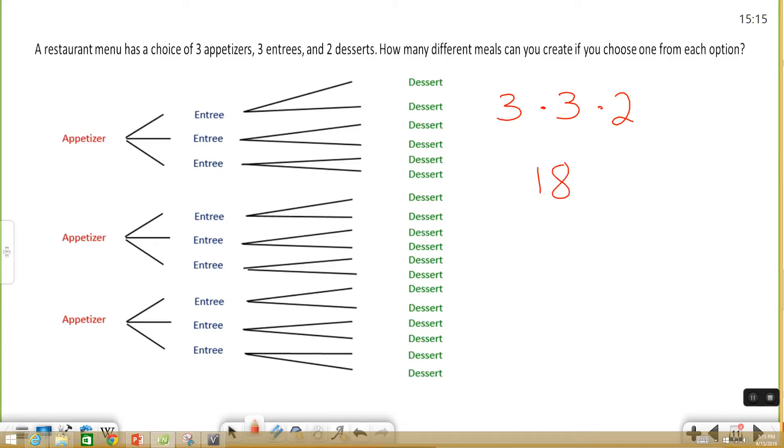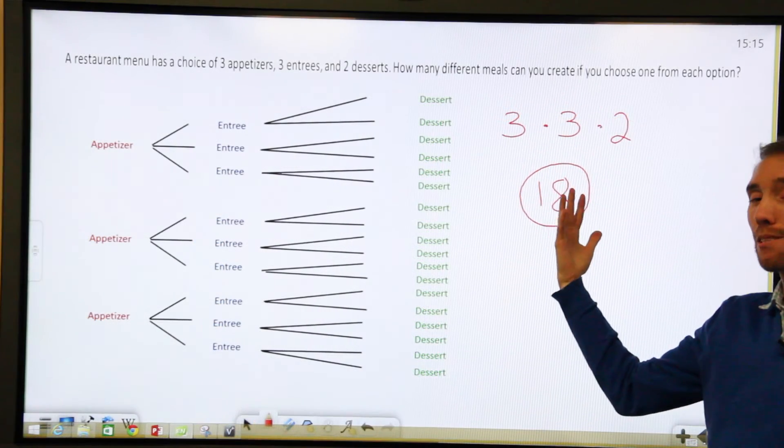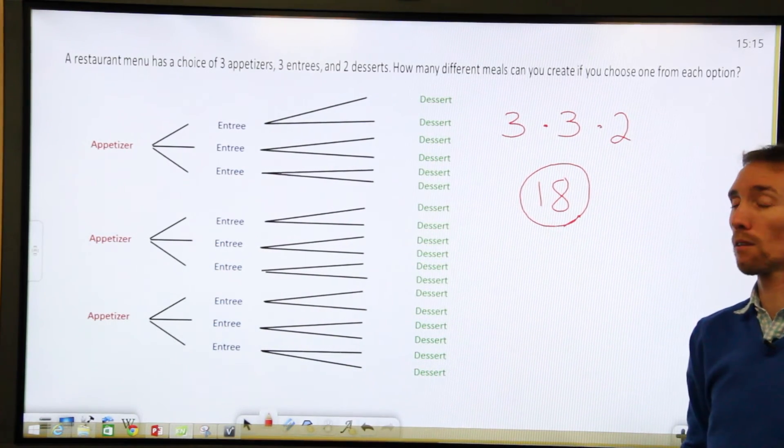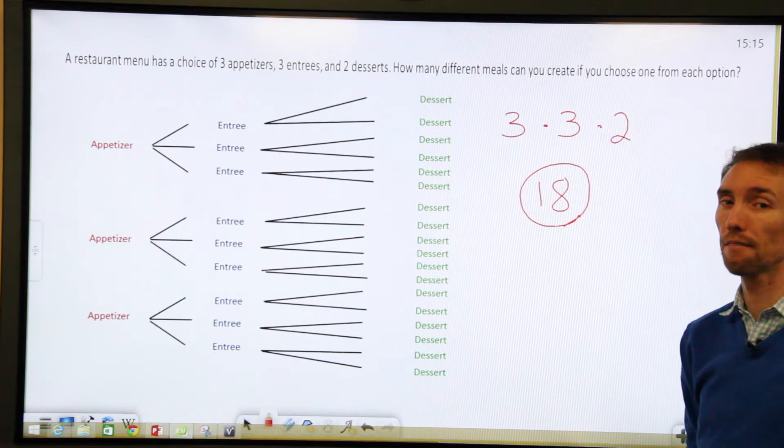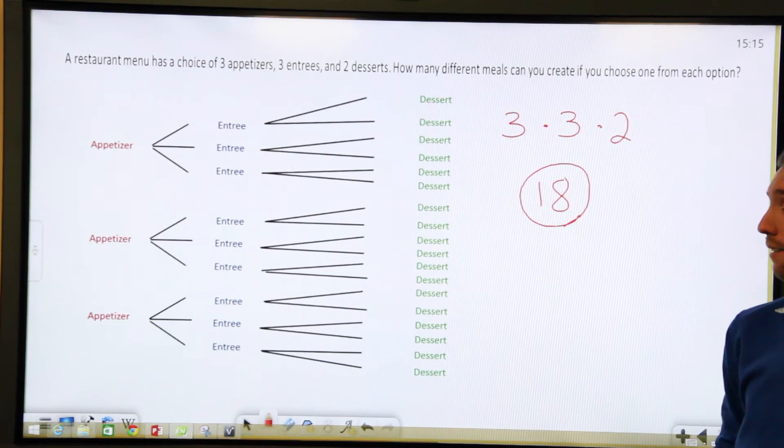If you do that, three times three is nine, nine times two is eighteen. And if you were to actually count out how many desserts I have here there's going to be eighteen. So obviously this is a much quicker way to figure out the total possible outcomes you can have than just drawing a diagram.